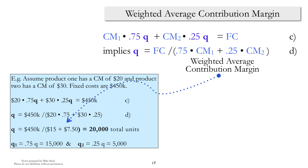And what we end up with, then, is a break-even equation, which says that the quantity, which is the total number of units sold, is equal to the fixed cost, $450,000, divided by $22.50. When we work that out, it means that we have 20,000 total units that should be sold.